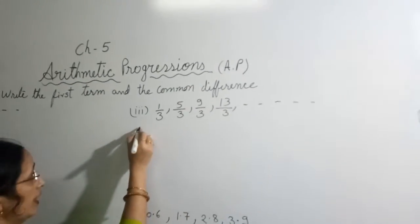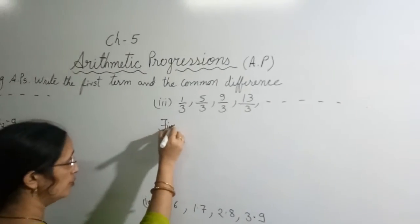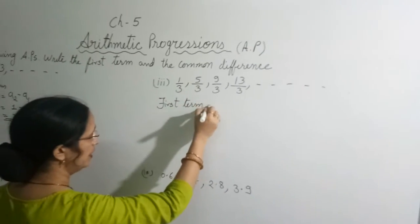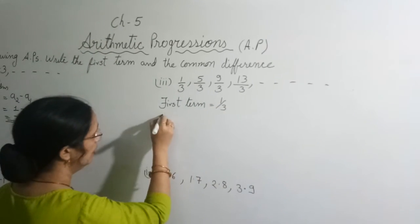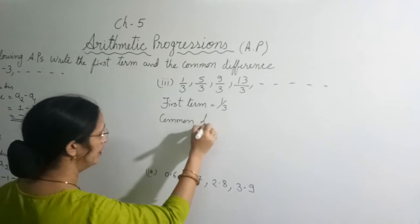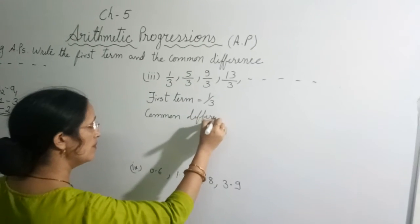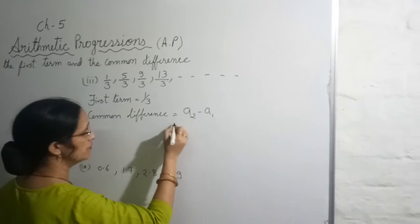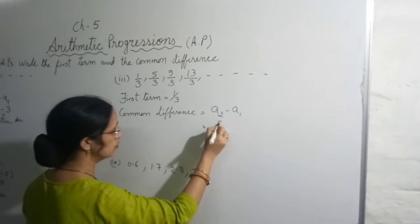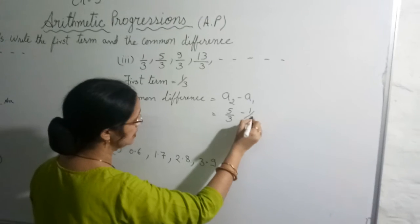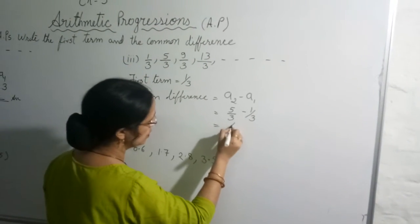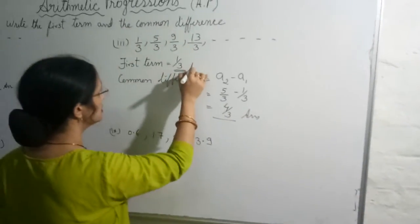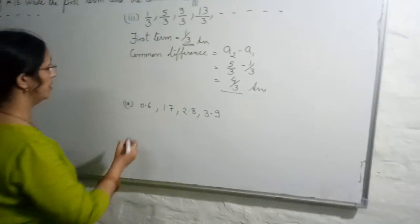This is a very easy chapter, but you have to be very careful about the signs and the formula. Here, the first term is equal to 1/3. The common difference is second term minus first term: 5/3 minus 1/3, which equals 4/3. That is the answer.